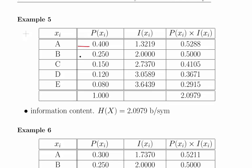Example 5: 40%, 25%, 15%, 12% and 8%, and working it out we would get the entropy to be 2.0979 bits per symbol.